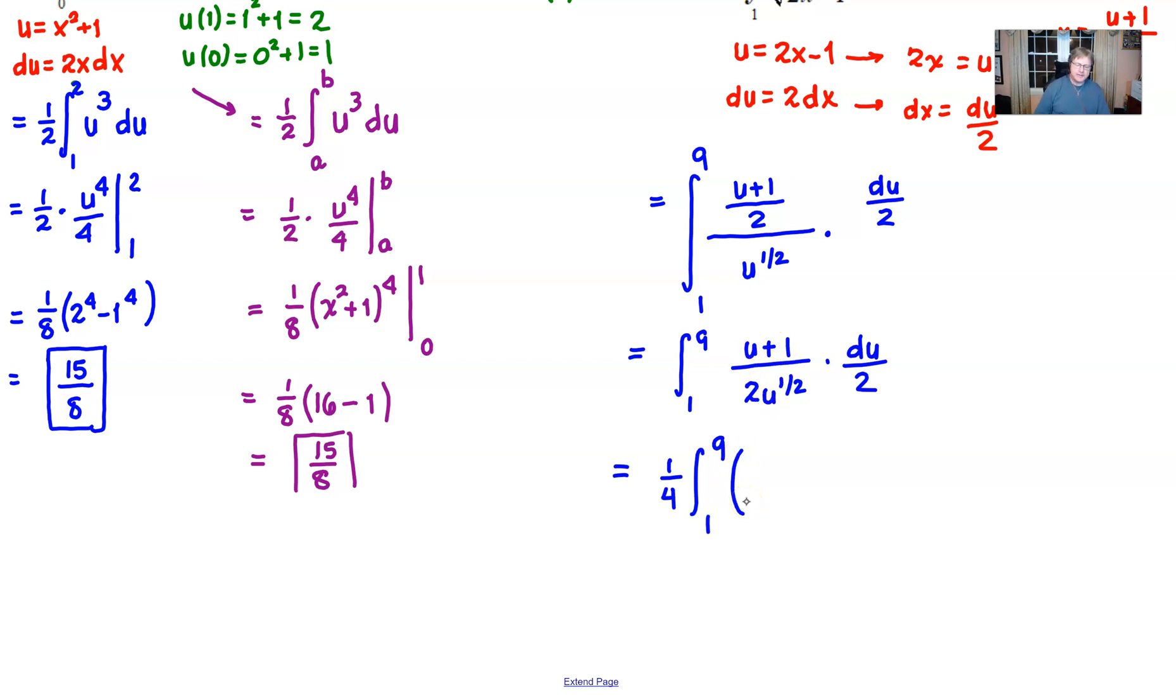Now I'm going to see if I can go ahead and simplify this by dividing this time. u divided by u to the half is u to the half and 1 divided by u to the half is u to the negative half.